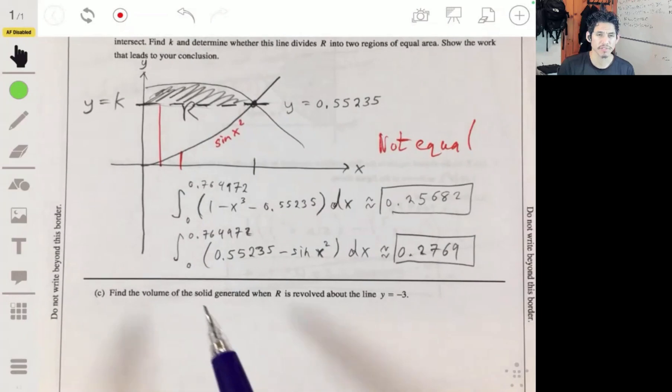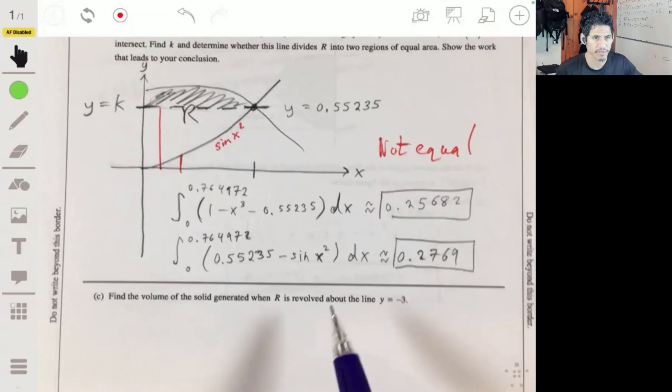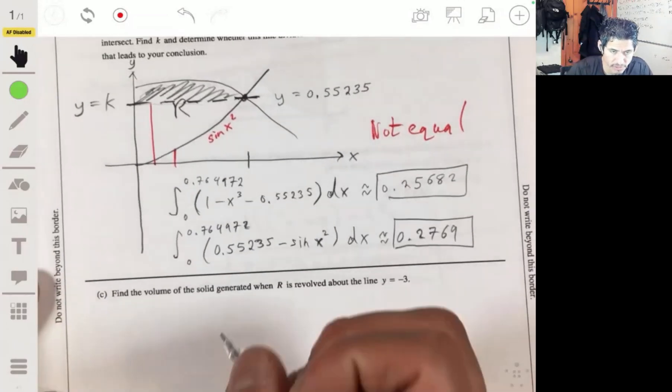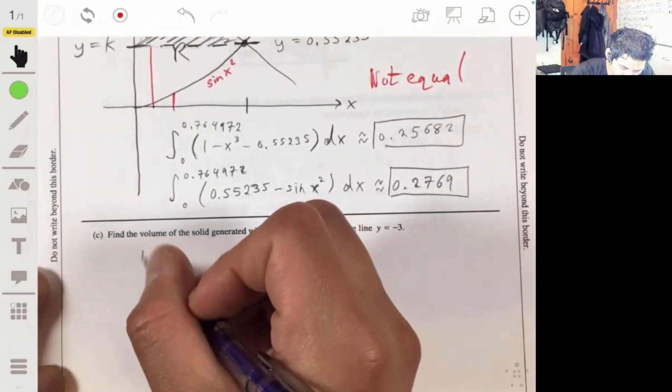And the last part, find the volume of the solid generated when R is revolved about the line y equals negative 3. Okay, so this is going to be a good one. Maybe we can draw one more sketch.